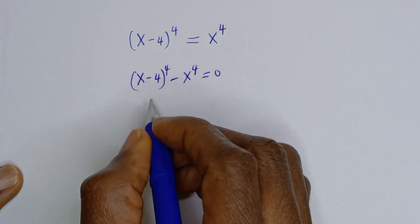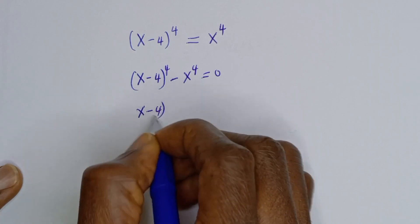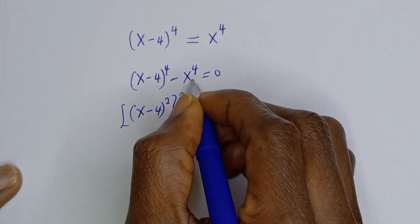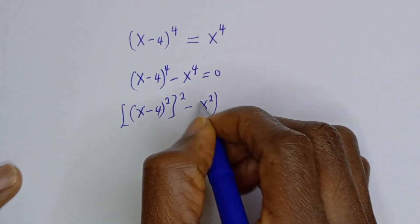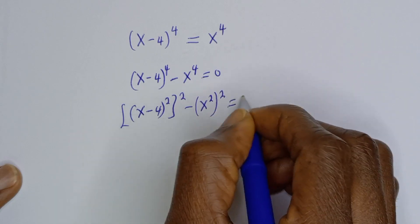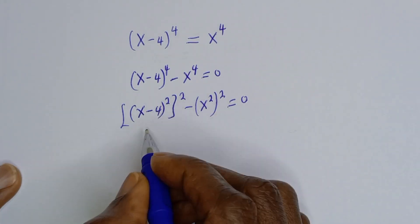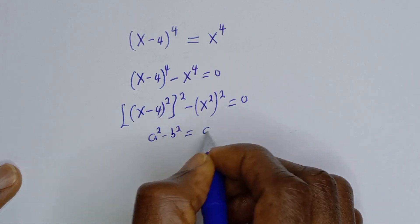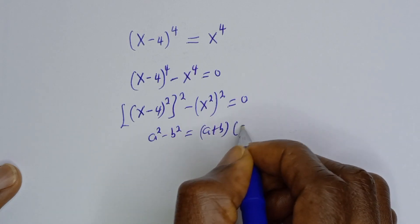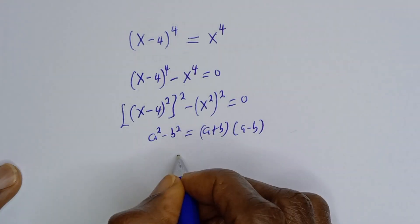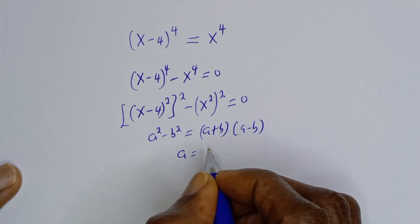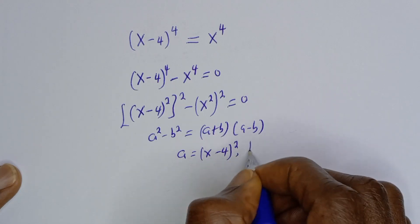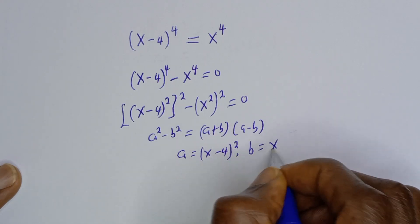Then this can be written as S minus 4 squared, squared minus S squared, squared is equal to 0. Now from here, this is in the form of A squared minus B squared. If you have A squared minus B squared, this is equal to A plus B, bracket A minus B, where A is equal to S minus 4 squared and B is equal to S squared.